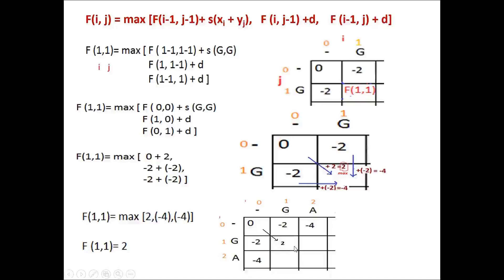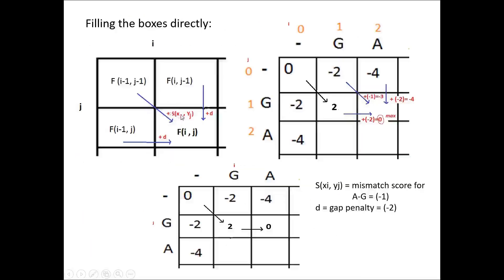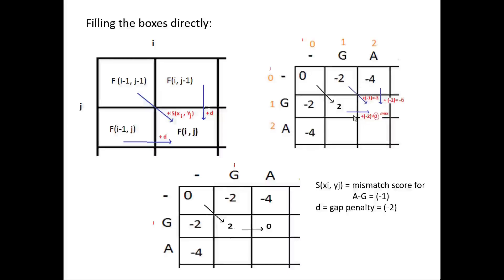The maximum value is 2, so 2 is placed in this box. This value was derived from the diagonal box, so the pointer is placed from that diagonal box. To fill the next box, we take the value of the diagonal box plus the match or mismatch score. Here we have G and A, which is a mismatch, giving a mismatch score of minus 1, so the total from the diagonal is minus 3. Adding the gap penalty of minus 2 to the other boxes gives values of which 0 is the maximum, derived from the box above. The pointer is placed accordingly.